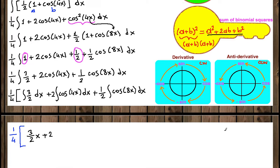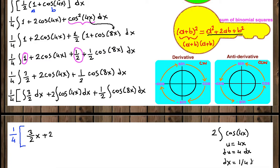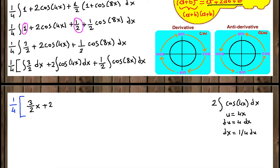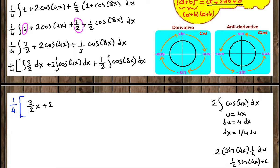For 2 cosine of 4x, we apply u-substitution. Let u equal 4x, then du equals 4 dx, so dx equals one fourth du. Rewriting, we get the anti-derivative of cosine — which is sine — of 4x, and instead of dx we write one fourth du. So one fourth times 2 gives one half sine of 4x plus C.